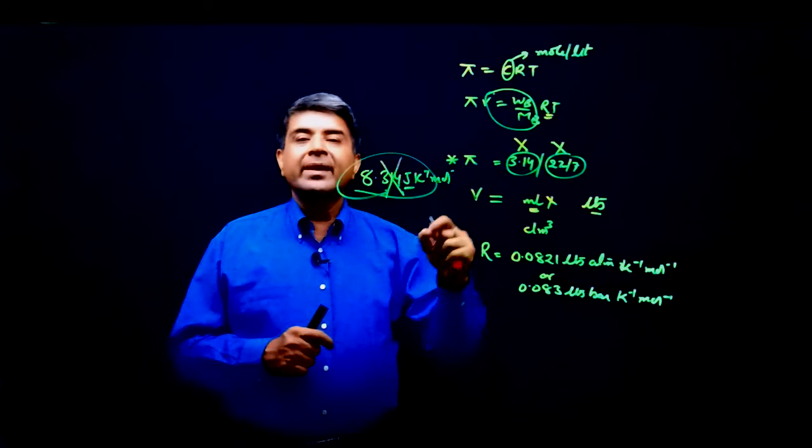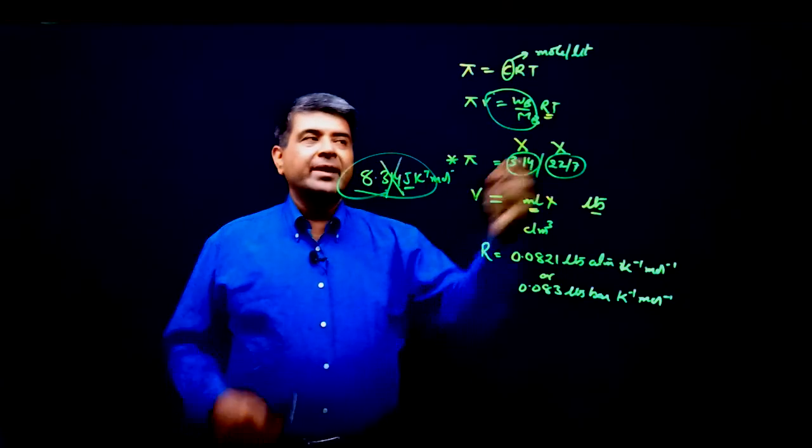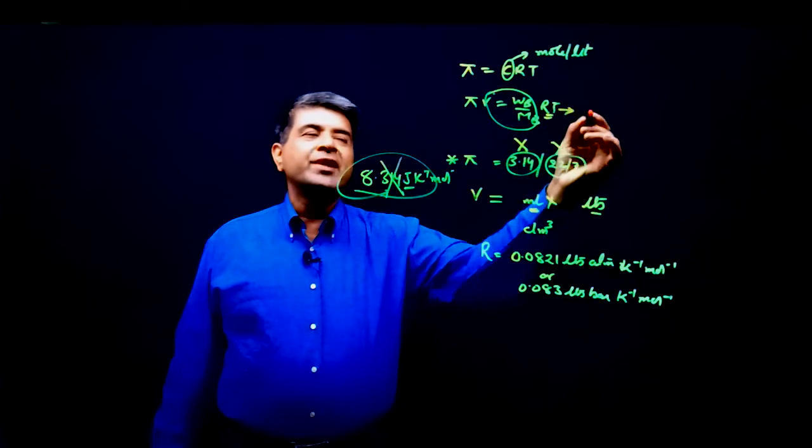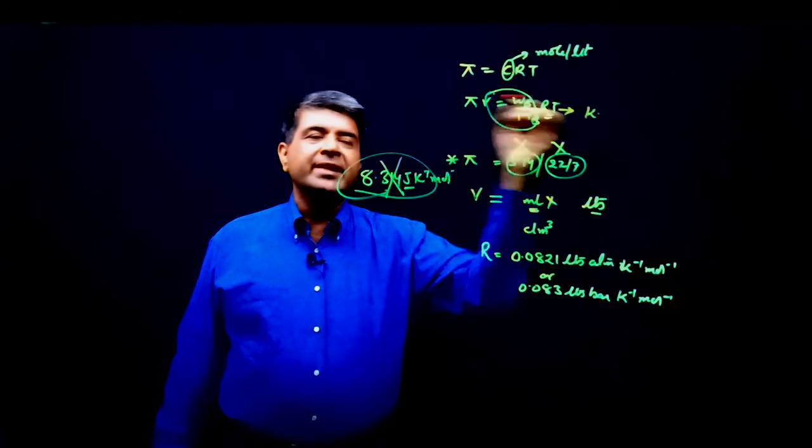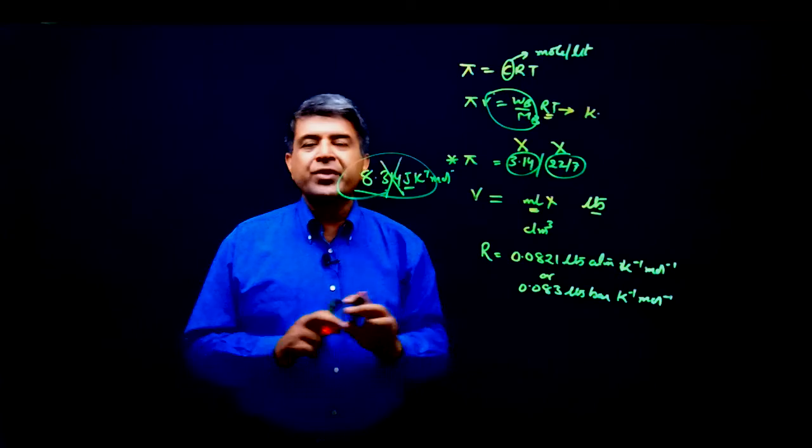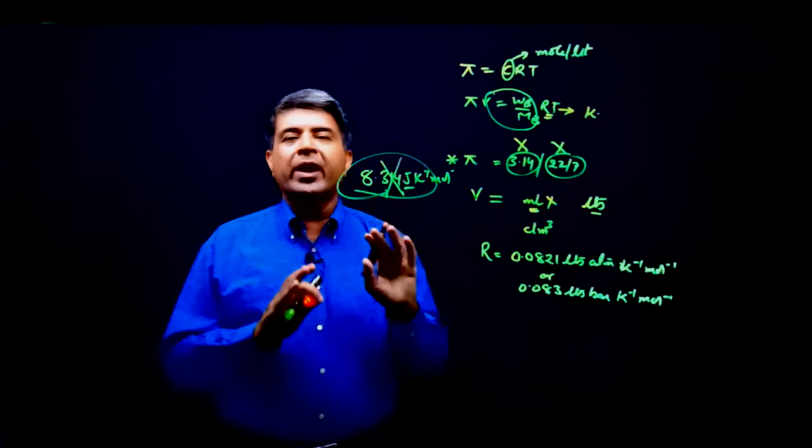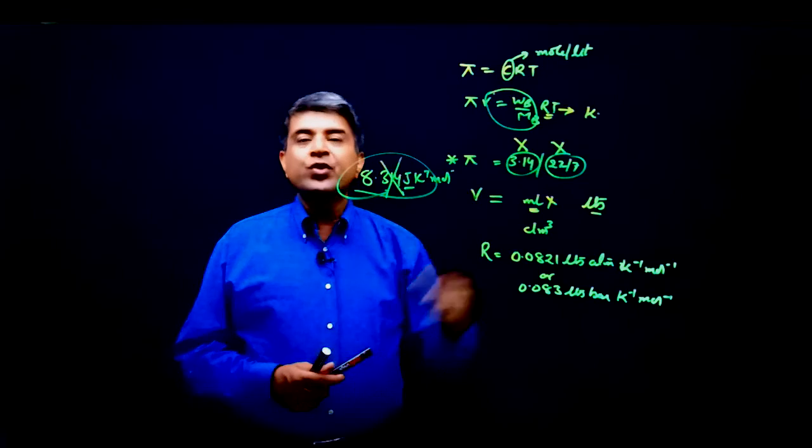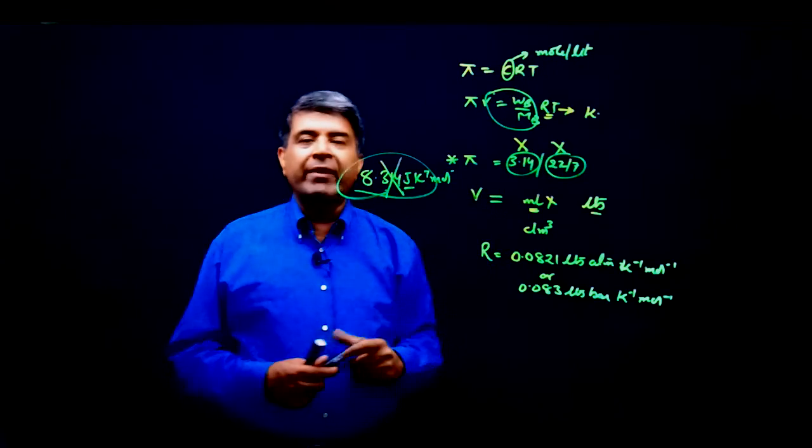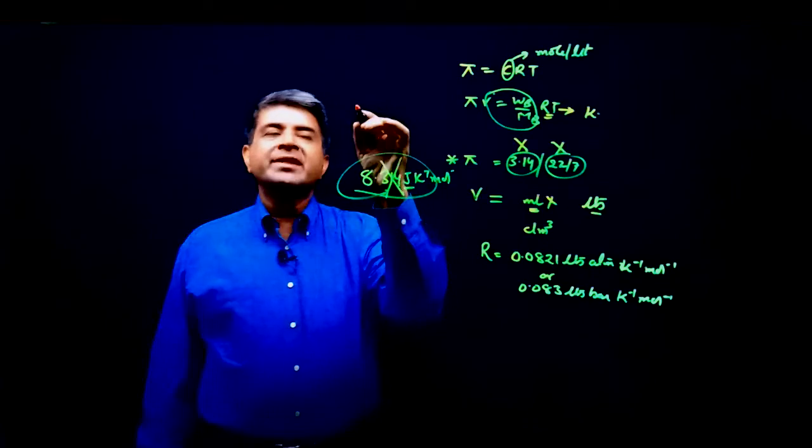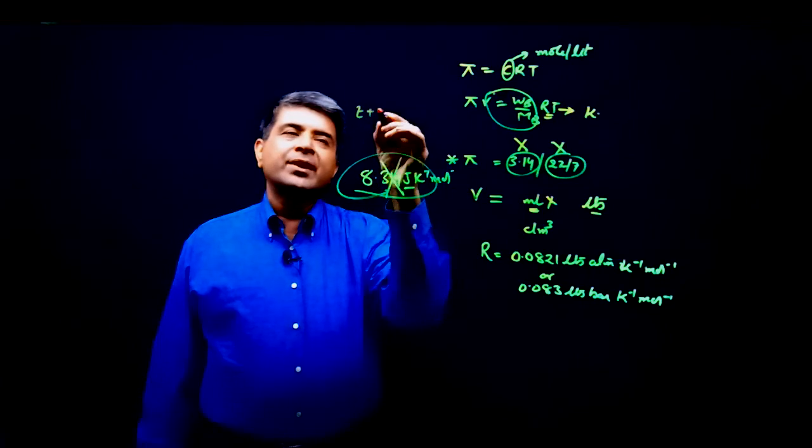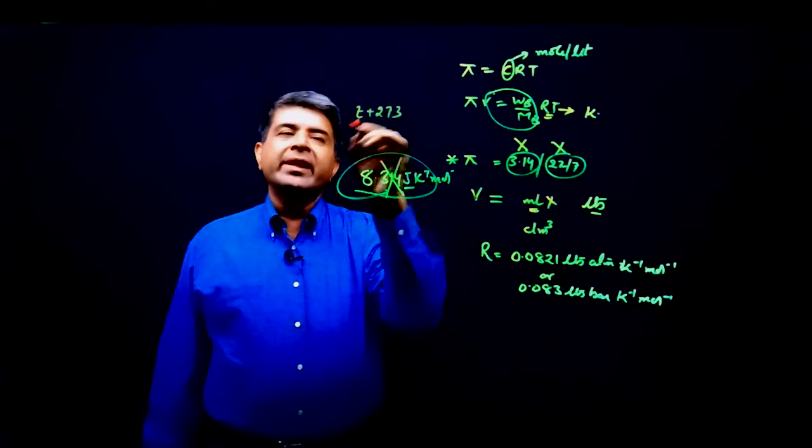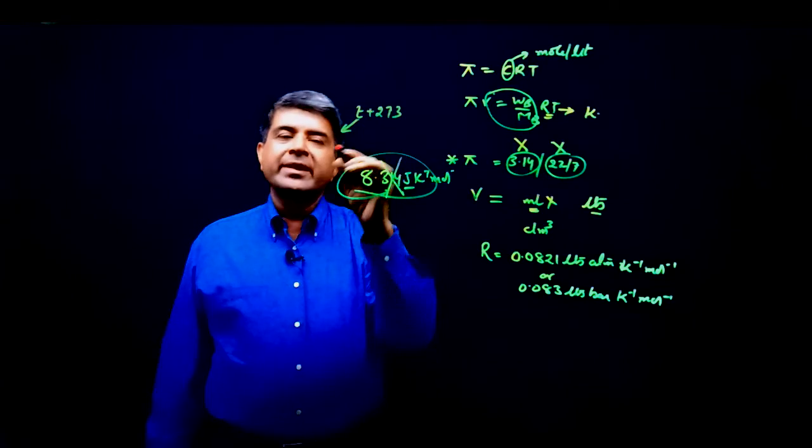Last would be the silly mistake that temperature is always used in Kelvin scale because in chemistry, whatever question you are solving and if there is temperature associated with it, you have to use the temperature in Kelvin and the conversion would be very simple: T plus 273 where T is temperature in degree centigrade.